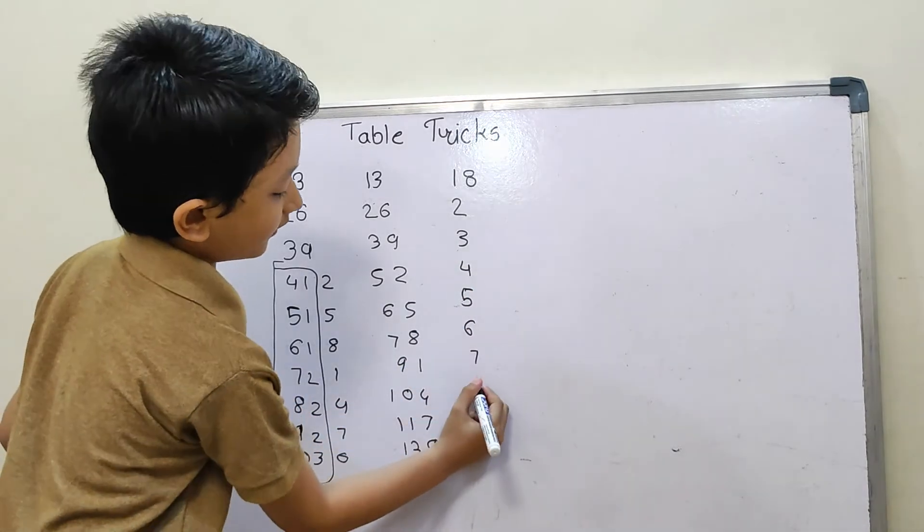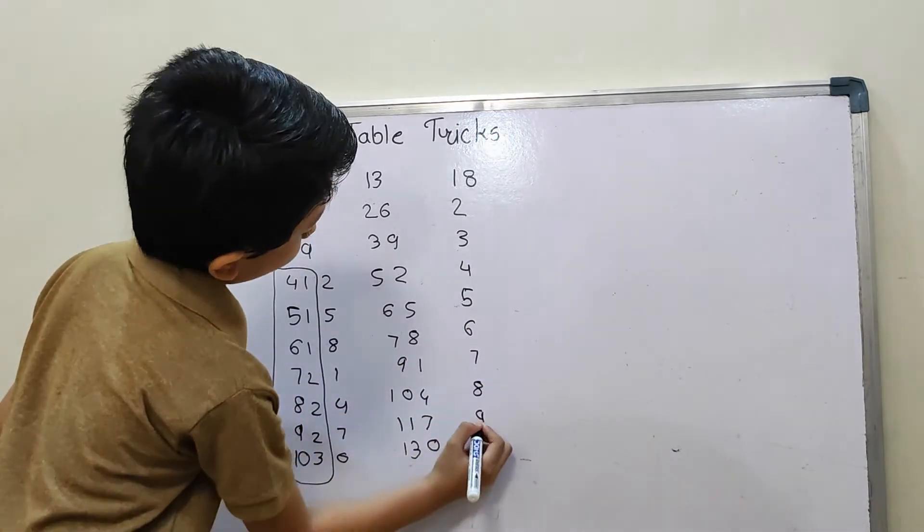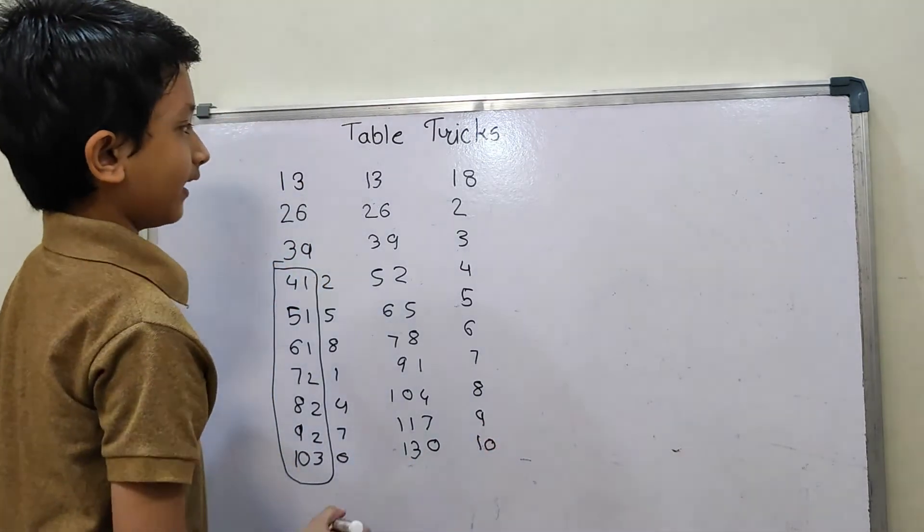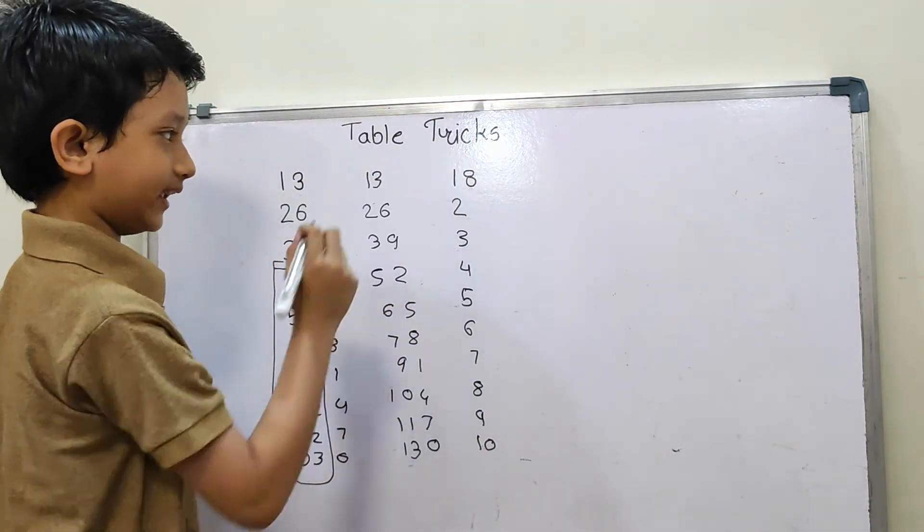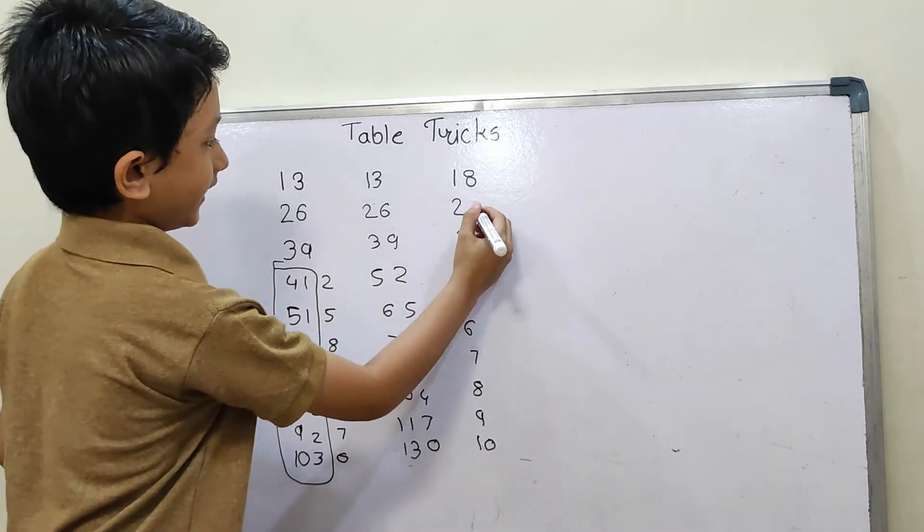5, 6, 7, 8, and then 1 as well for the table of 8. So 8 times 1 is 8, 8 times 2 is 16.